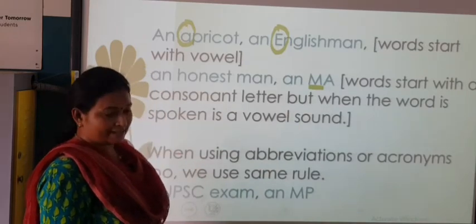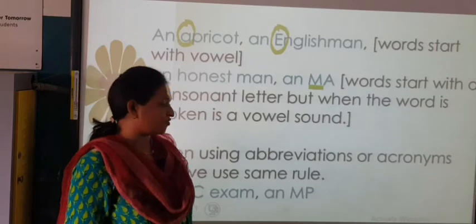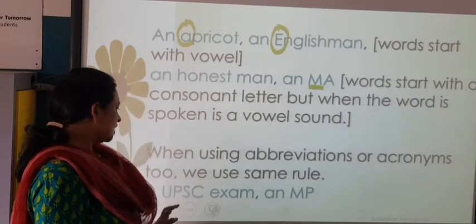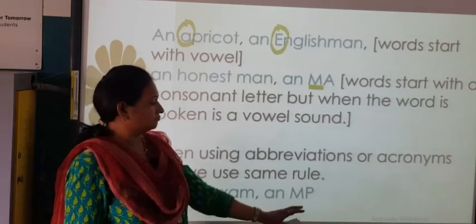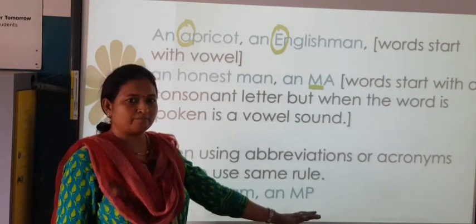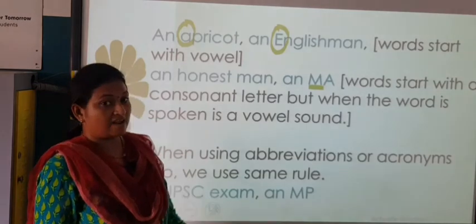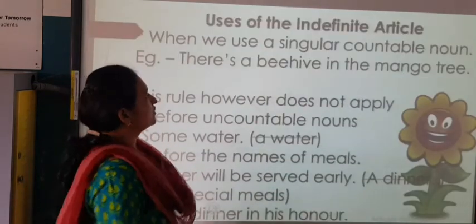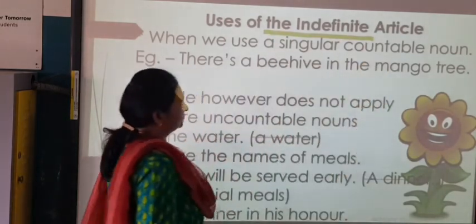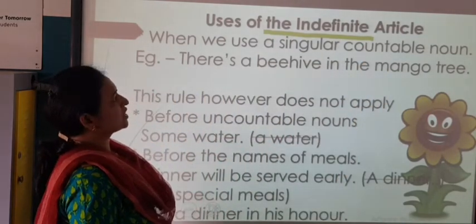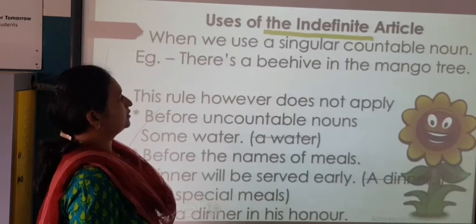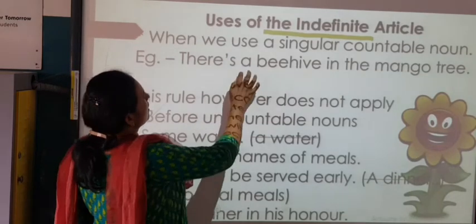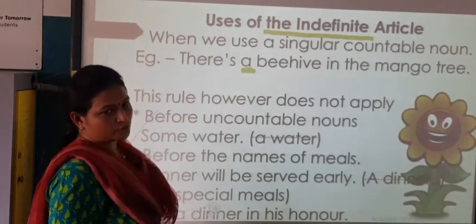When using abbreviations — that means short forms or acronyms — we use the same rule. For example: 'a UPSC exam', 'an MP' — Minister of Parliament. Uses of the indefinite article: when we use a singular countable noun, we use the indefinite article. For example: 'There is a beehive in the mango tree.'